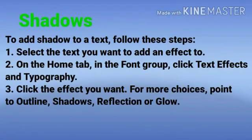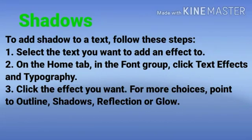Shadows. To add shadow to a text, follow these steps. Number 1: Select the text you want to add an effect to. Number 2: On the Home tab, in the font group, click Text Effects and Typography. Number 3: Click the effect you want. For more choices, point to outline, shadows, reflection or glow.